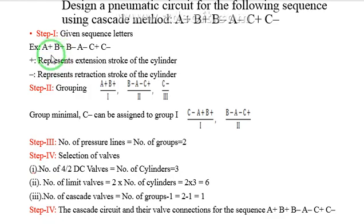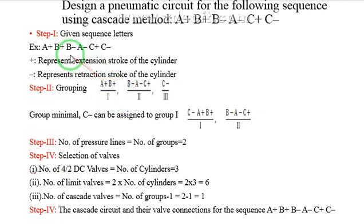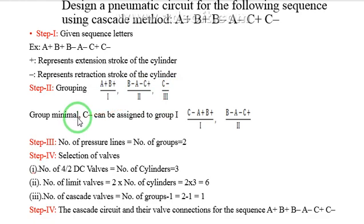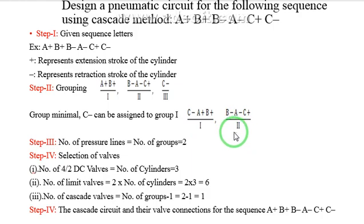For grouping conditions, no letters should be repeated within any group. Groups are identified as group 1, group 2, and so on. We identify A, B — then B minus is a repeated letter, so A plus, B plus is considered group 1. Next, B minus, A minus, C plus — adding C again would be a repeated letter, so that stops there, making it group 2. C minus can be assigned to group 1 under the minimum group condition, since A, B, and C appear with no repetition. So finally, we are grouping the given sequence into 2 groups.